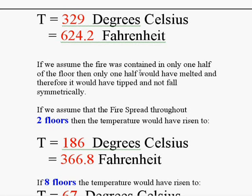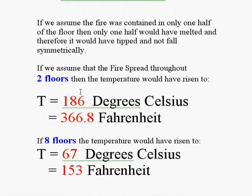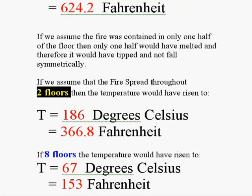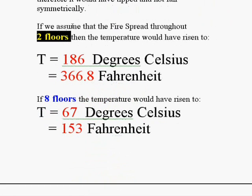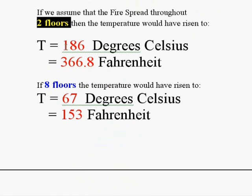If we assume that the fire was contained in only one half of the floor, then only one half of that floor would melt, and therefore, it would have tipped and not fall symmetrically. So, we eliminate this assumption. If we assume that the fire spread throughout two floors instead, and do the same calculations, then the maximum temperature that could have been reached would be 186 degrees Celsius.